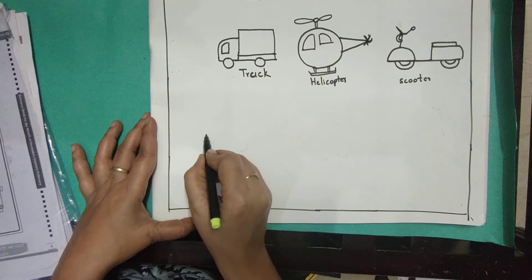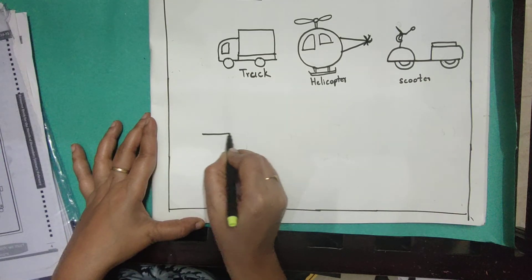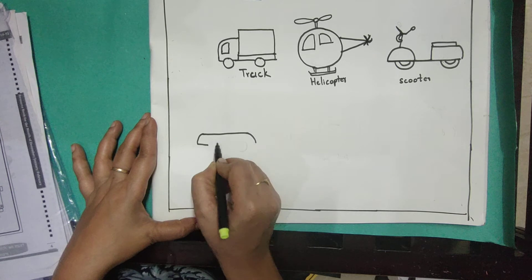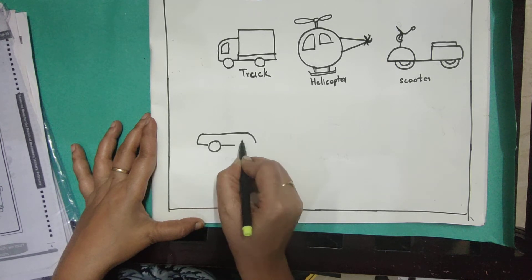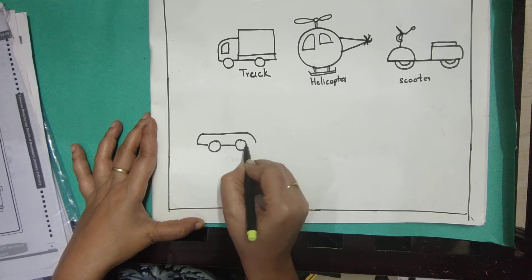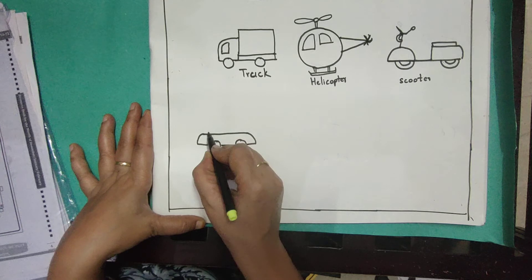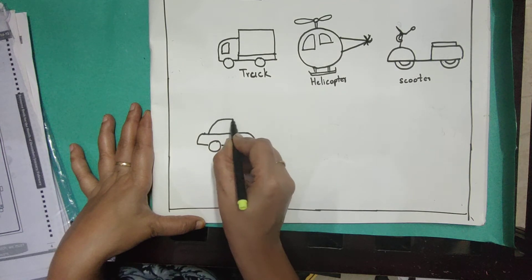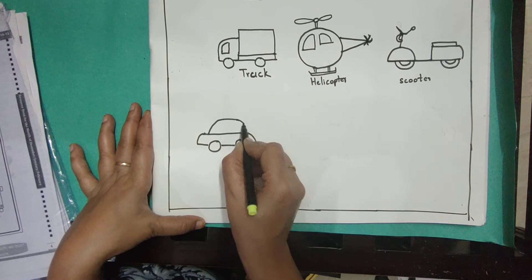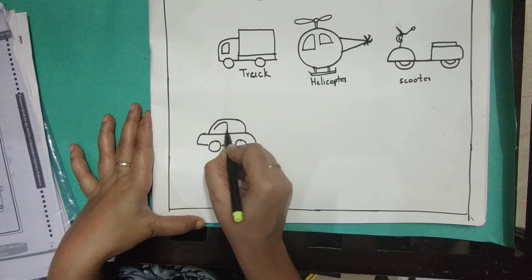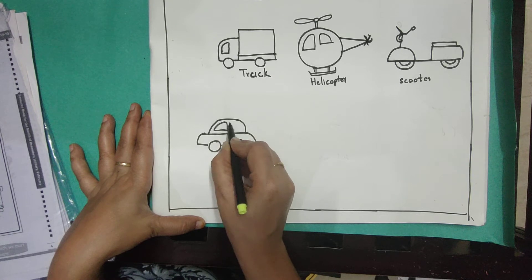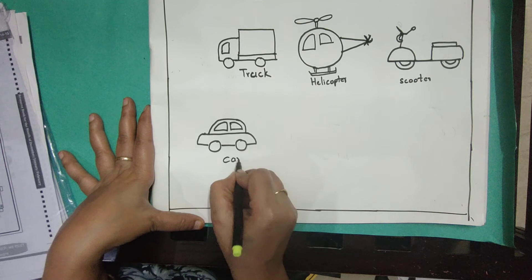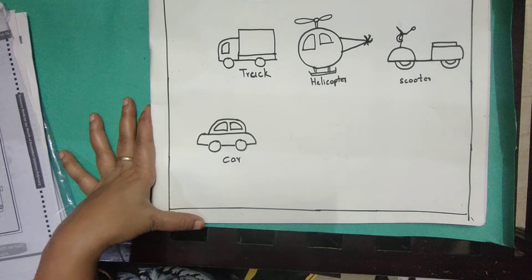Now we are going to draw one more picture. Here you should draw one more picture. After completing here, from here you should draw like this. What is this picture? Car.